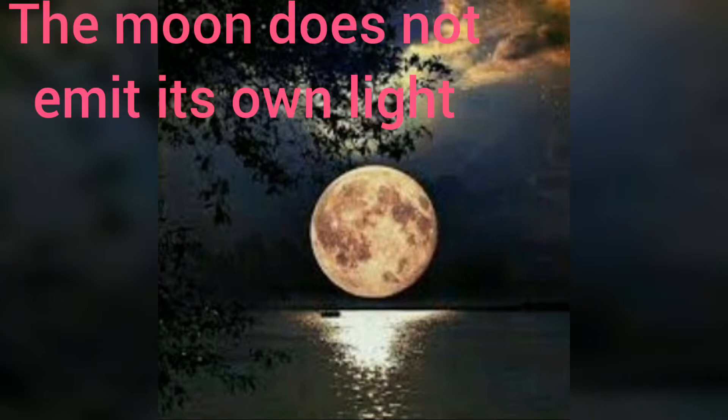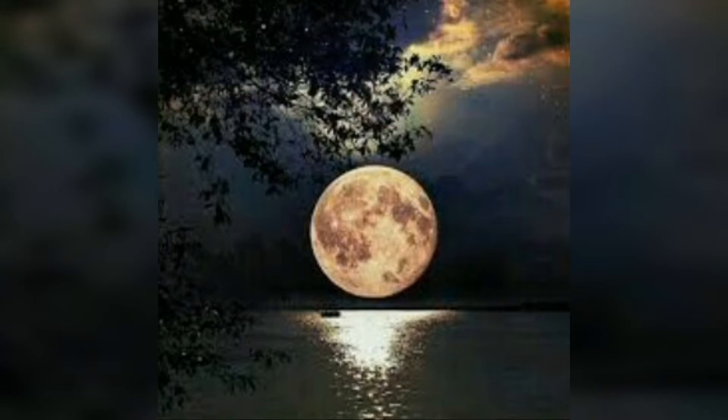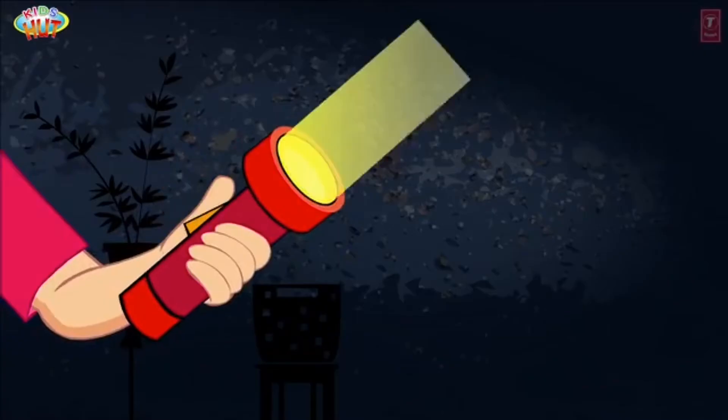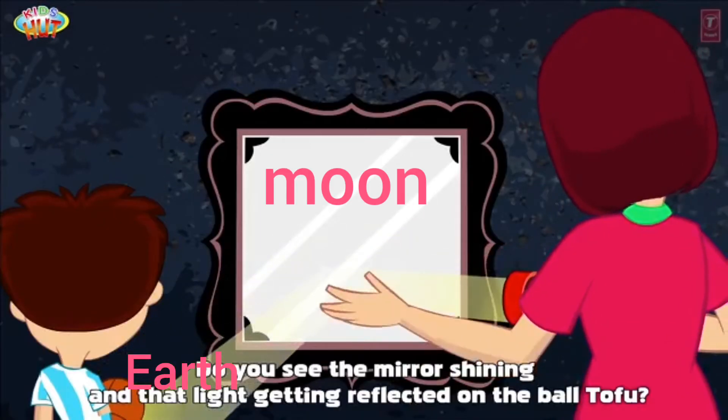Do you know that the moon does not emit its own light? The moon only reflects the light from the sun. It is just like a mirror reflects light from a torch.